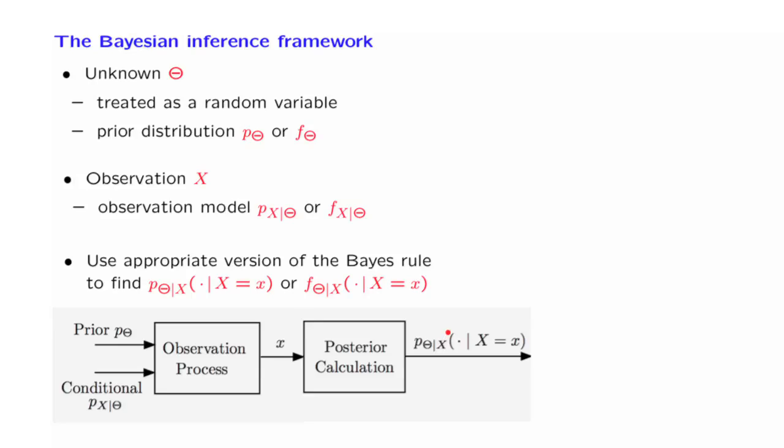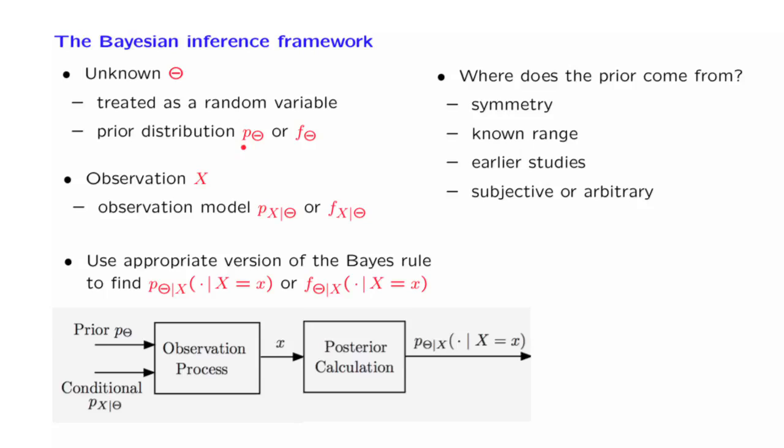There is one philosophical issue about this framework: where does this prior distribution come from? How do we choose it? Sometimes we can choose it using a symmetry argument. If there are a number of possible choices for theta and there's reason to believe they're all equally likely, then this symmetry consideration gives us a uniform prior.